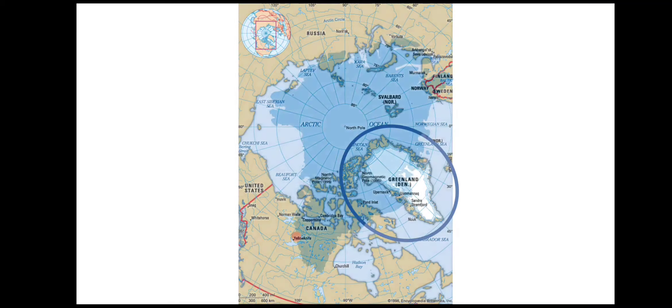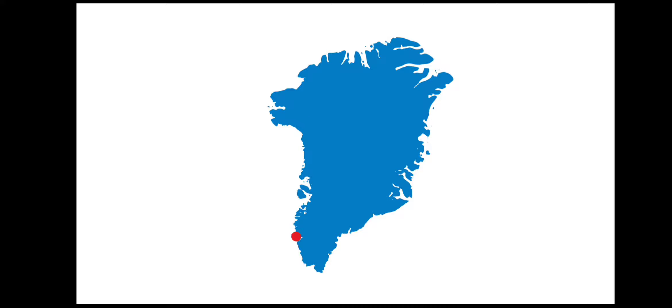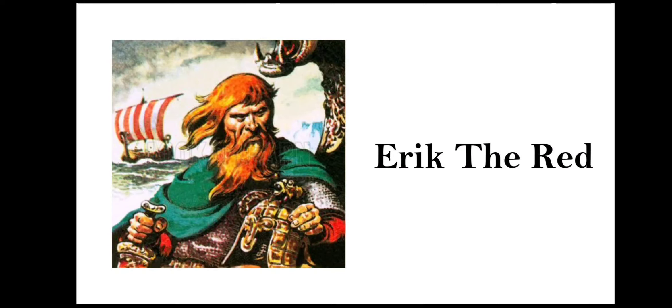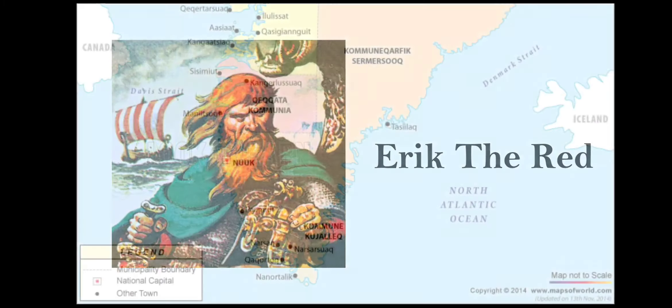Greenland is an island — it is not a continent. Greenland is a member country of the Kingdom of Denmark. Nuuk is the capital of Greenland, whose old name was Godthab. It is located east of the Canadian Arctic Archipelago, between the Arctic and Atlantic Ocean. The first European who visited Greenland was Eric the Red, who gave the island its name.